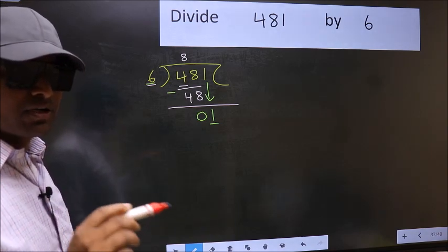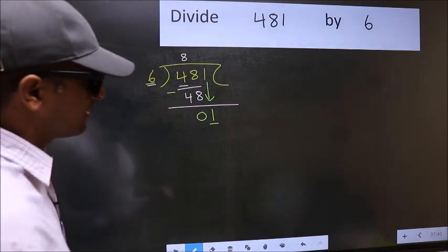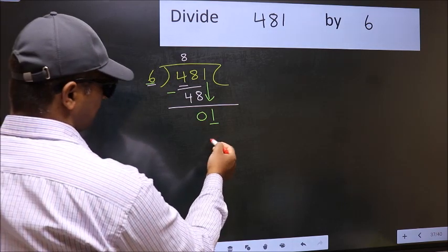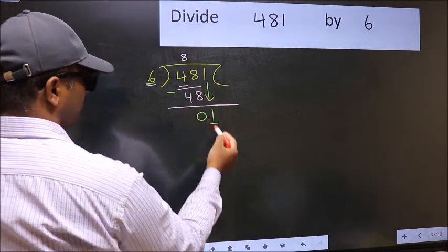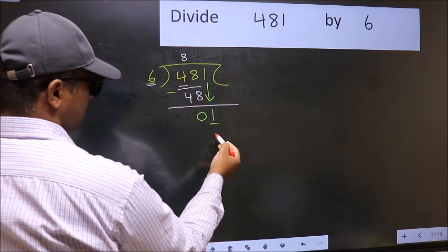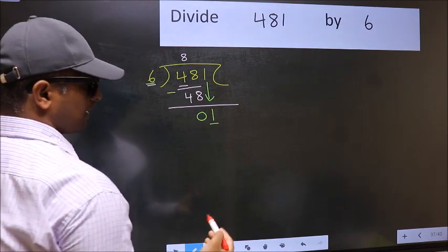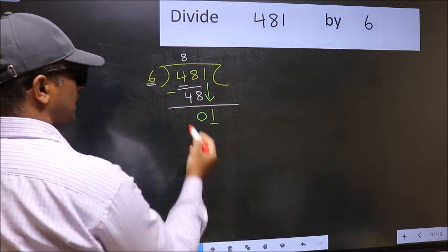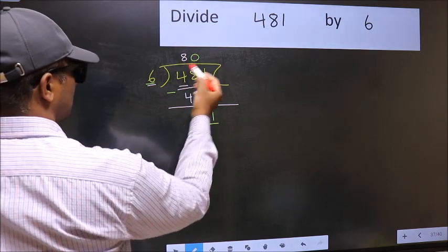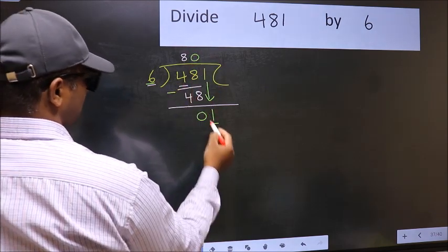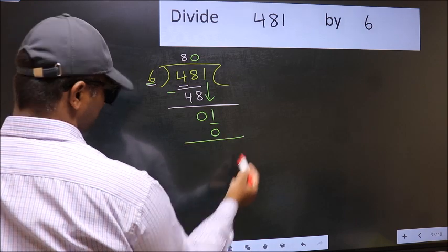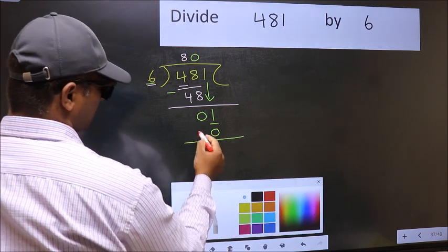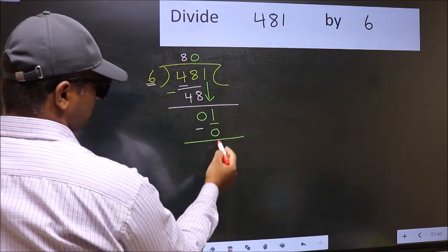Instead, what you should think of doing is what number should we write here. If we take 1, we will get 6, but 6 is larger than 1. So what we should do is we should take 0. So 6 into 0 is 0. Now you should subtract: 1 minus 0 is 1.